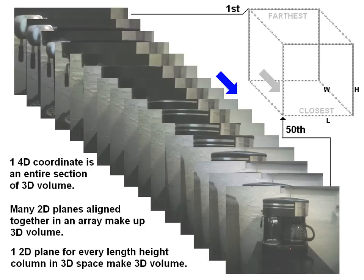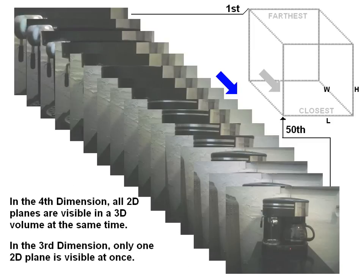Many 2D planes align together in an array make a 3D volume. 1 2D plane for every length height column in 3D space make 3D volume. In the 4th dimension, all 2D planes are visible in the 3D volume at the same time. In the 3rd dimension, only one 2D plane is visible at once.